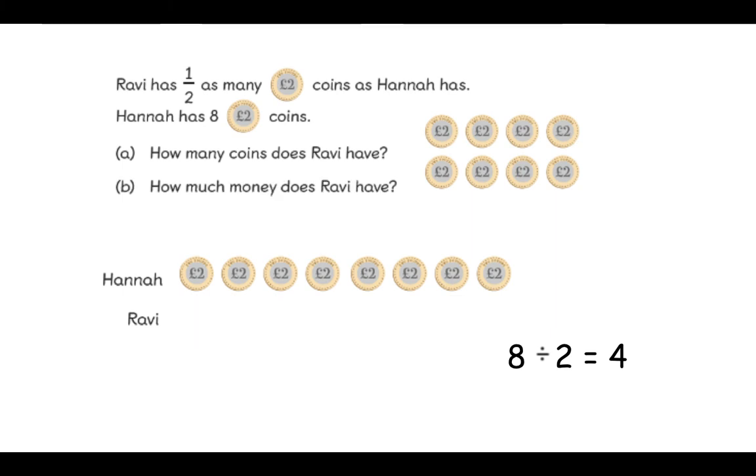We have worked out how many coins Ravi has. Now we need to count how much money this is. Remember, these are two pound coins. So each coin stands for two. Let's count together. Two pounds. Four pounds. Six pounds. Eight pounds. So we can see that Ravi has four coins. But Ravi has eight pounds. Well done year three for giving it a go.